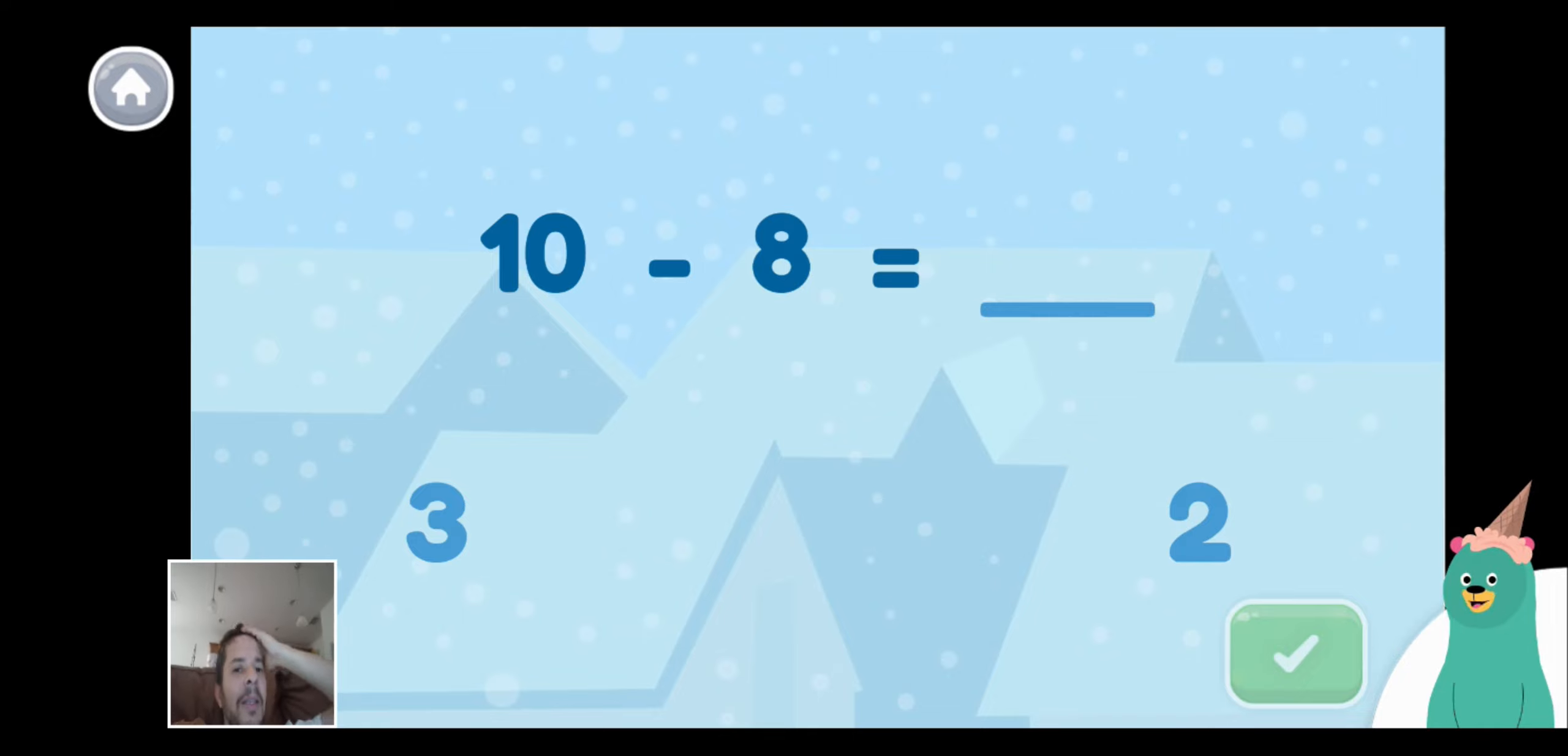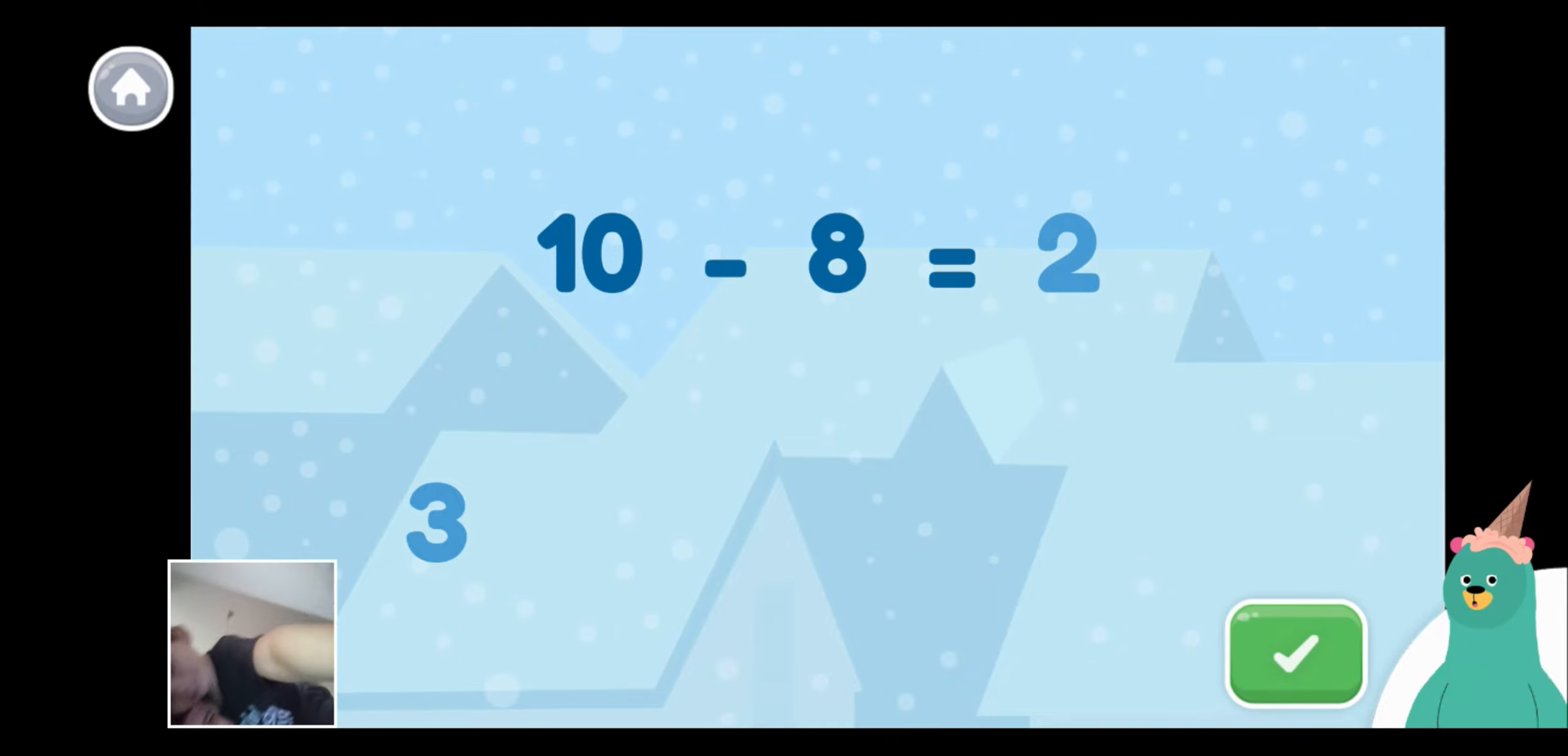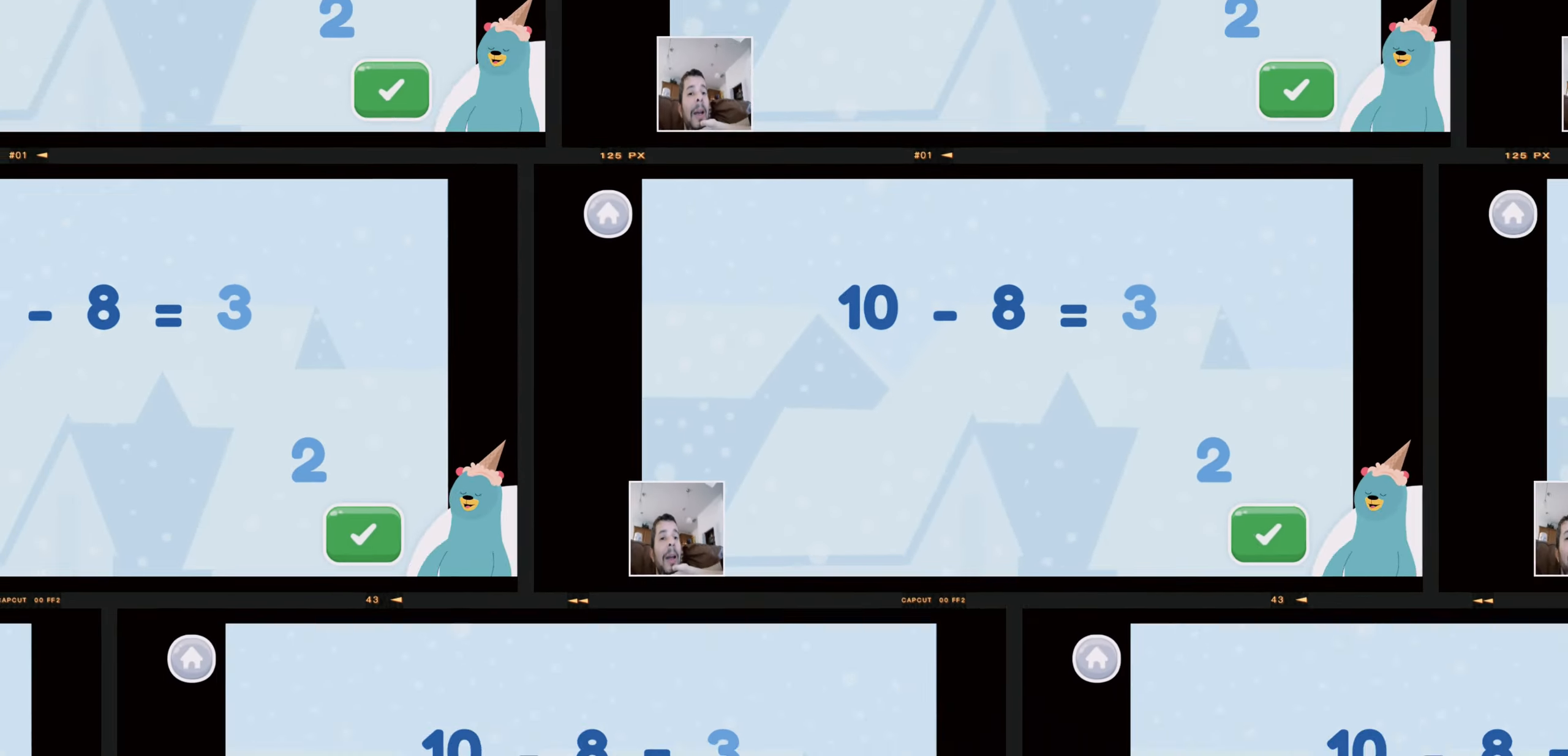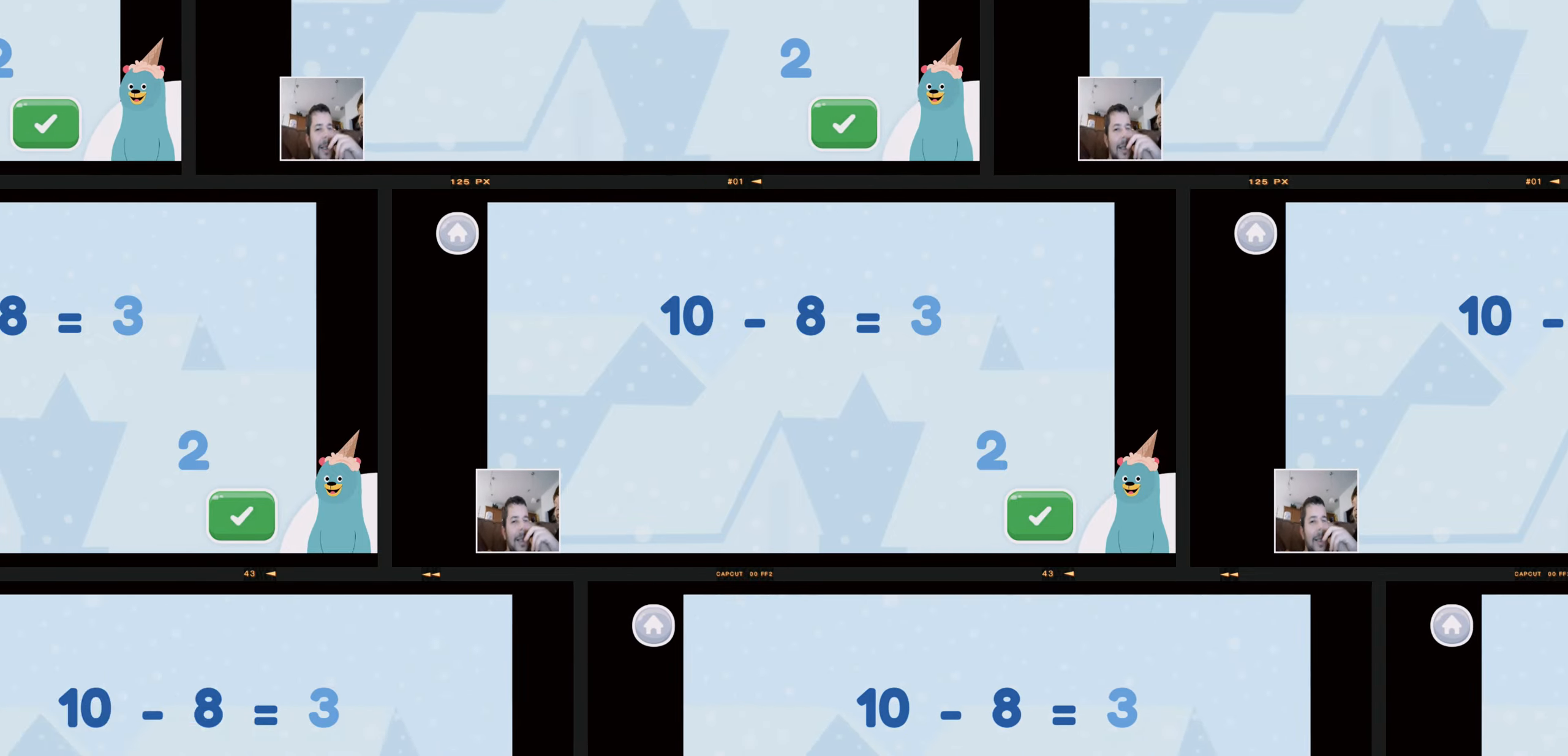Here is another tricky question. Drag the number to make the equation false. Where you at? Oh no! Here is another tricky question. Drag the number to make the equation false. Oh no! Oh no! Oops! You want to make the equation false. Remember, false means wrong or incorrect. Which number will make the equation false? Oh, I think that means false. Good work! The equation you wrote is false. 10 minus 8 does not equal 3.